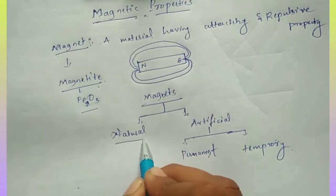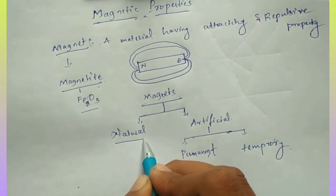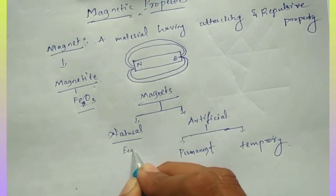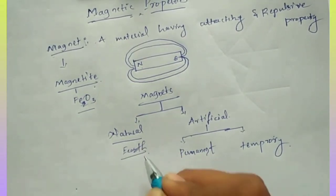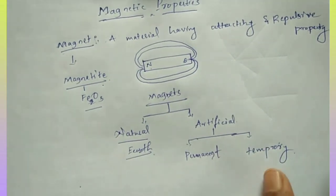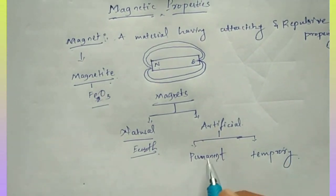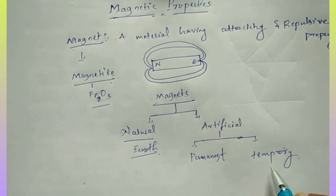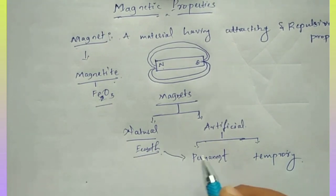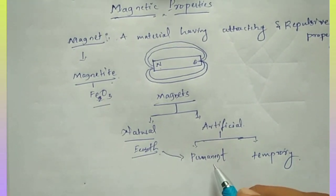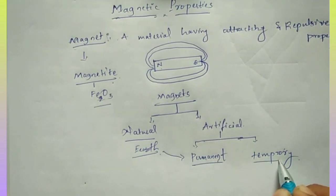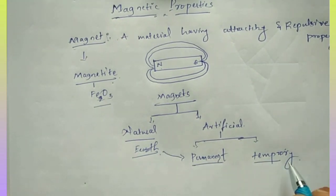Natural magnets are those you get from nature — for example, Earth is one of the natural magnets. Natural magnets are always permanent magnets. In artificial magnets, we create two types: one is the permanent magnet and the other is the temporary magnet.